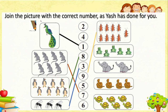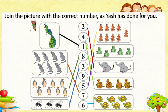Here frogs: 1, 2, 3, 4, 5 — five frogs, we draw a line to 5. Only two elephants are dancing — we draw a line to 2. Here we can see four snakes — we draw a line to 4. Here turtles: 1, 2, 3, 4, 5, 6 — six turtles, we draw a line to 6. We have completed our activity, joining the picture with the correct number.